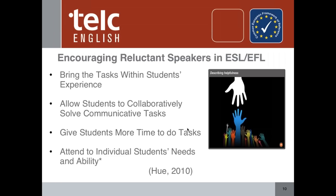The second suggestion would be: allow them to collaboratively solve communicative tasks — give them a chance to work together in small groups and help them build their confidence with a smaller audience. Prepare, help each other, and then maybe present to the group. Give them more time to do tasks, really working through it step by step. And attend to individual students' needs and abilities. When you're doing these communicative tasks, it's unlikely that everybody's at exactly the same level, especially with adults.